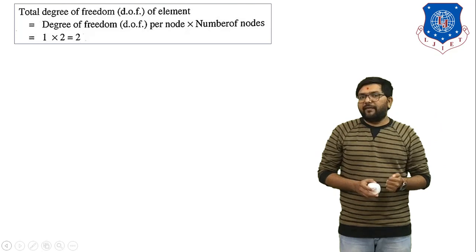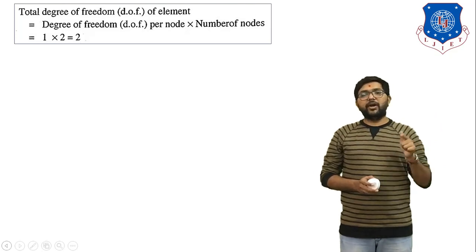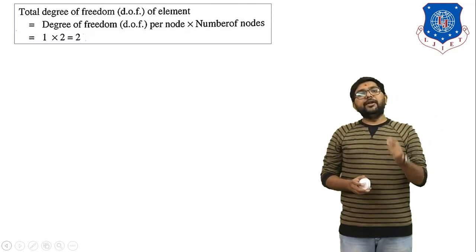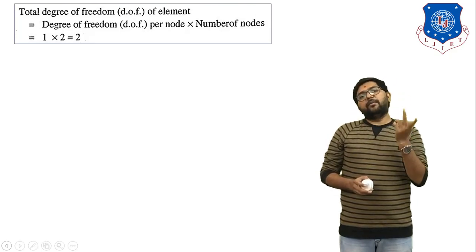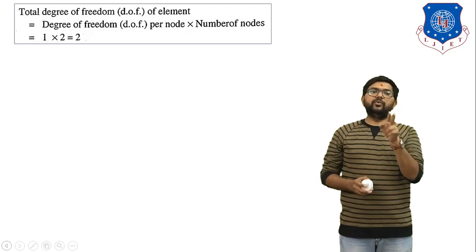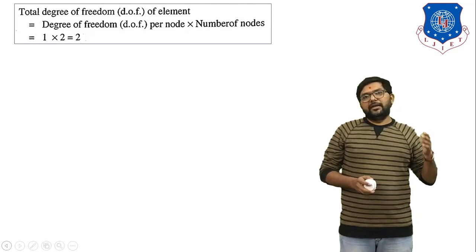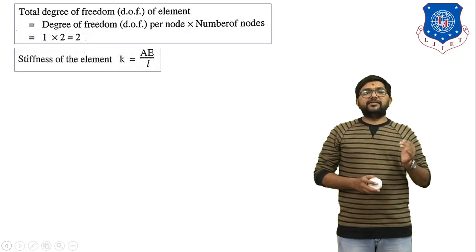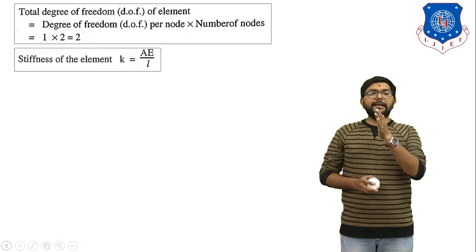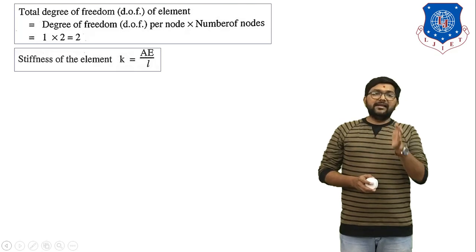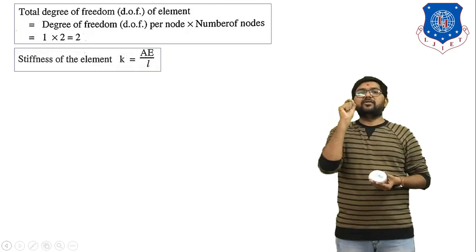The total degree of freedom of the element equals the degree of freedom per node multiplied by the number of nodes: 1 times 2 equals 2. That is the total degree of freedom of the element. The stiffness of the element is k equals AE upon L. We already know that stiffness equals force upon deflection.